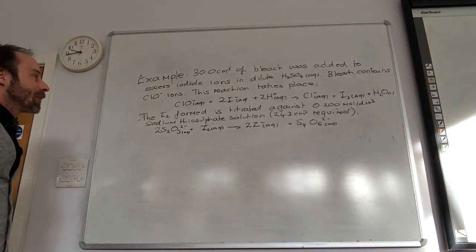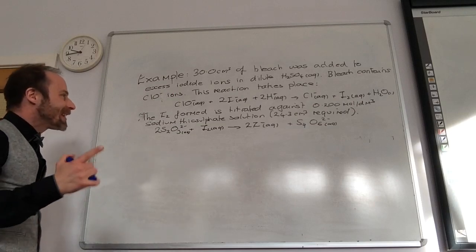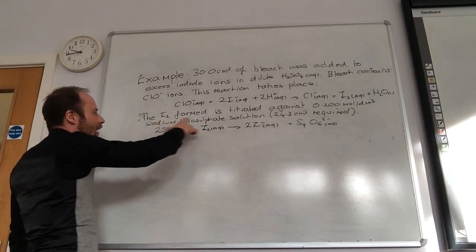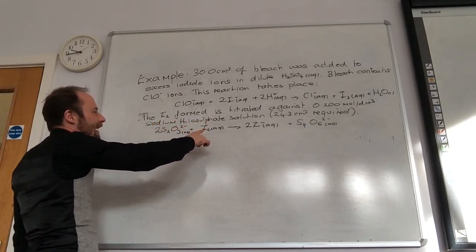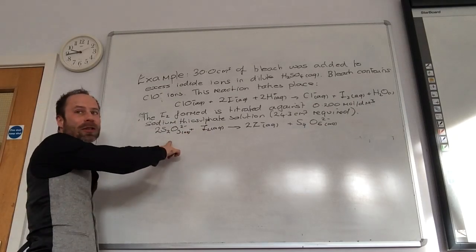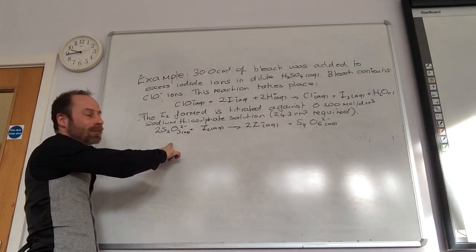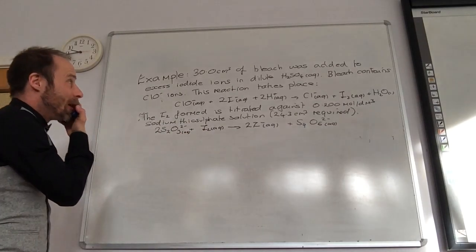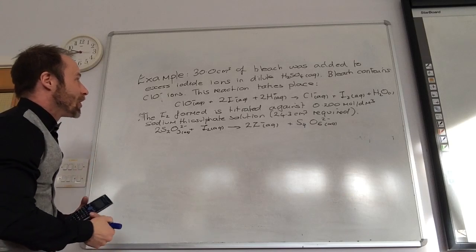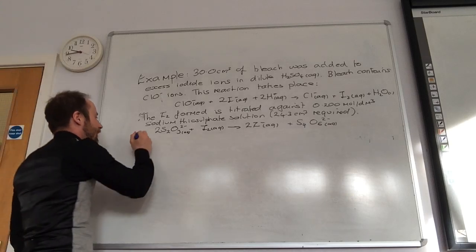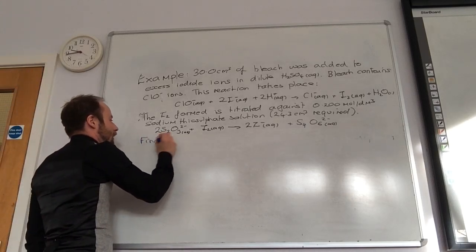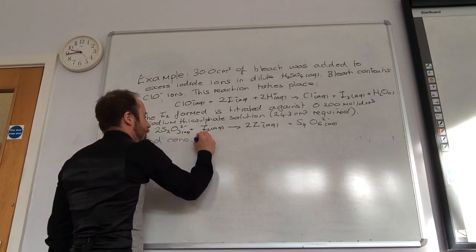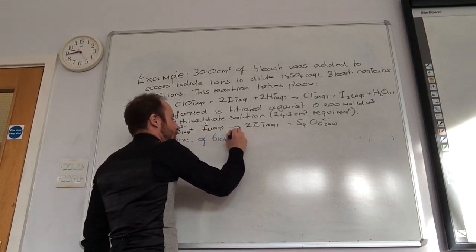So you'd always produce iodine as well? I would produce, yeah, it's got to, because I then take that iodine. The iodine you formed is titrated against thiosulfate, according to this equation. What are we finding? So what I want to do is I want to find out the concentration of bleach. Find concentration of bleach.